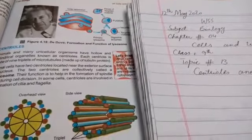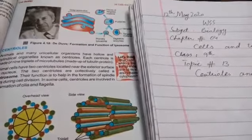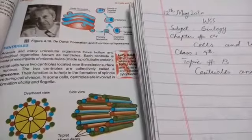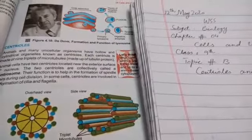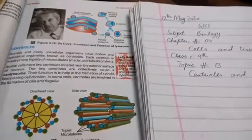Bismillahirrahmanirrahim, assalamu alaikum dear students of Wisdom School System. Class 9, today our topic of discussion from the subject biology, chapter number 4, cells and tissue, is on page number 65 of your textbook. The name of the topic that we are going to learn about today is centrioles and the second topic is vacuoles.